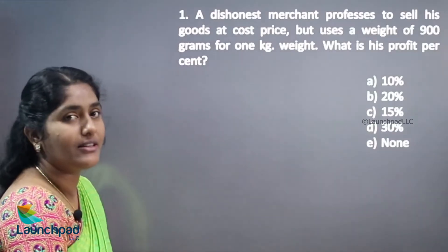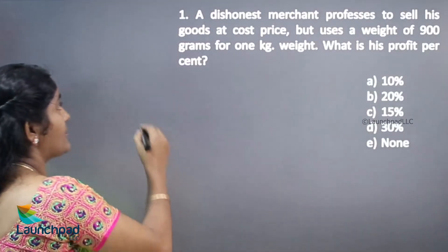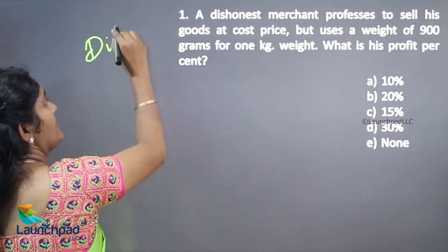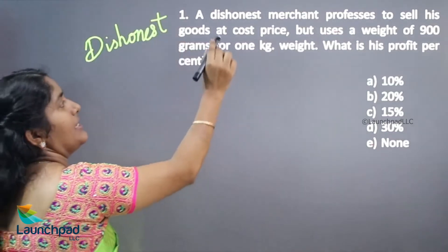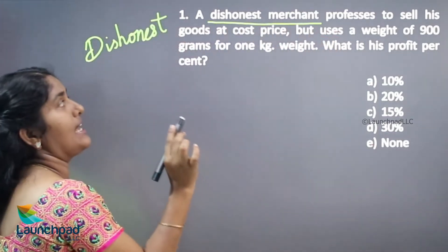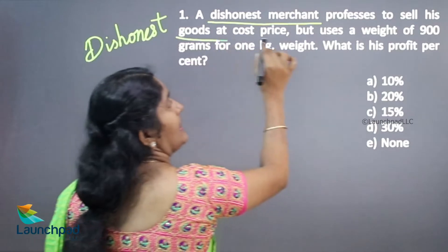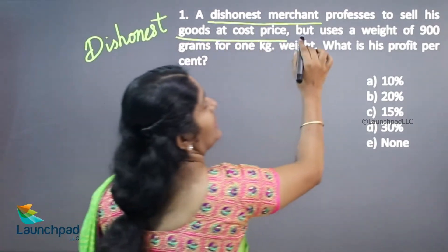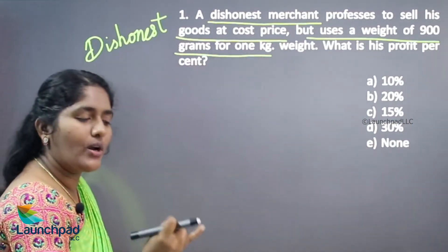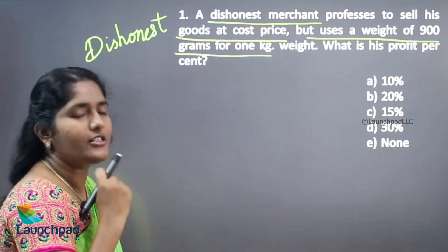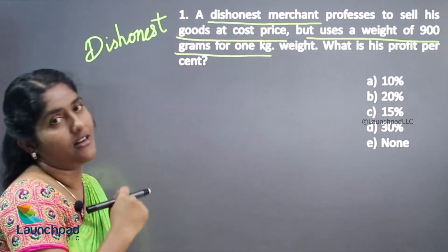Hello everyone. In this video we are going to see the next type of profit and loss concept. This question type is called the dishonest person. A dishonest merchant prefers to sell his goods at cost price but uses a weight of 900 grams for 1 kg. This applies to a dishonest dealer, dishonest shopkeeper, and dishonest milkman.